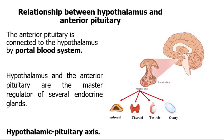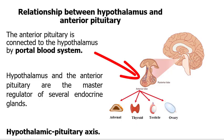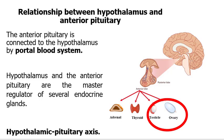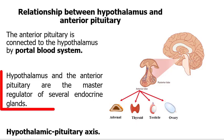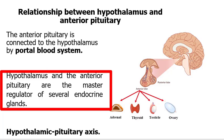Before we start discussing the regulation of thyroid hormones, we need first to understand the relationship between the hypothalamus and the anterior pituitary gland. The hypothalamus is connected to the anterior pituitary gland by the portal blood system, whereby hormones secreted from the hypothalamus are transported through the portal system to the anterior pituitary gland. The anterior pituitary gland then secretes hormones that regulate multiple endocrine glands such as the adrenal gland, thyroid gland, and the gonads — that is the testis and the ovary. Therefore, the hypothalamus and the anterior pituitary gland are considered to be the master controllers of a number of endocrine glands.